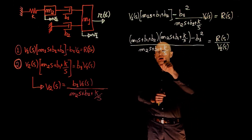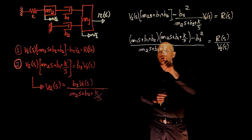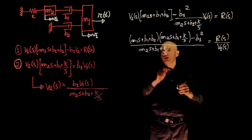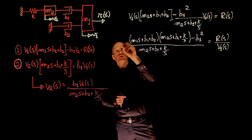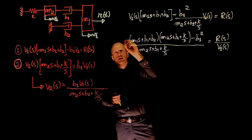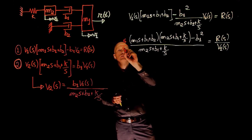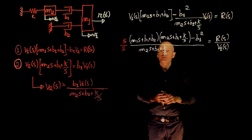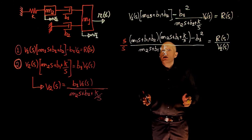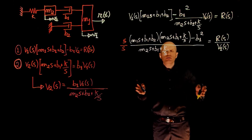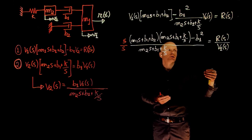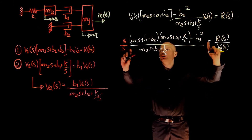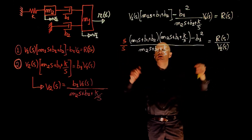Expanding and multiplying through by s to clear the 1/s term in the denominator, and then inverting the entire expression to obtain the transfer function — since we need the output divided by the input, that is V1 over R — the denominator becomes the numerator of the transfer function.